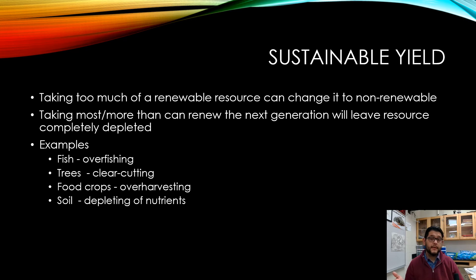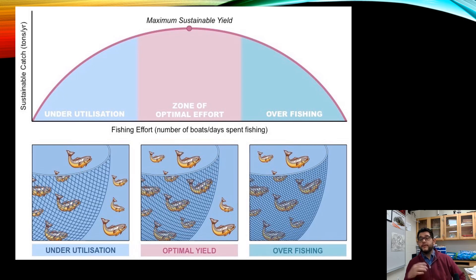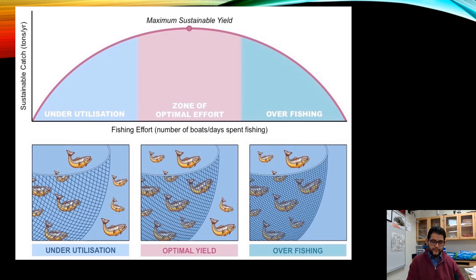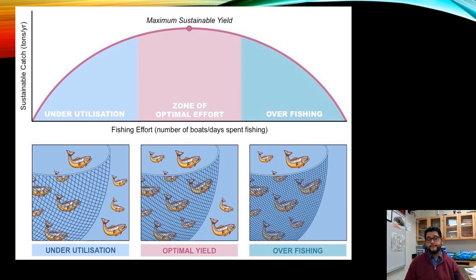We've seen long-term problems from this in the past, such as the Dust Bowl. Using fish as an example: think of a curve where we want to be in the middle — the optimal yield — where we've taken enough to feed people or make a profit, but left enough to maintain for next and continual generations. You can under-utilize, which isn't bad, but subsistence-level harvesting can be a problem. You want to reach optimal yield without crossing into overfishing, which collapses the entire curve.